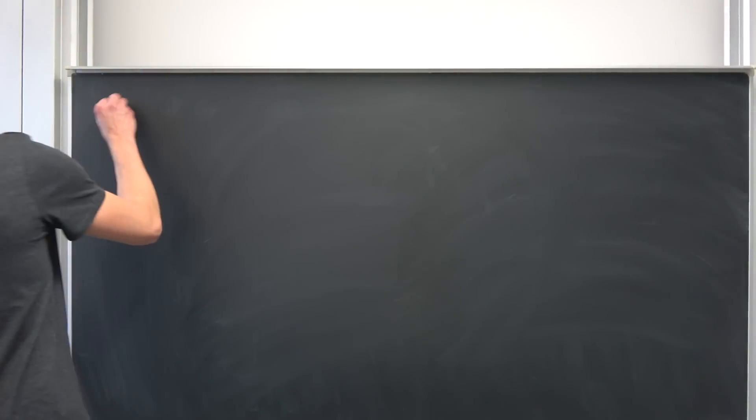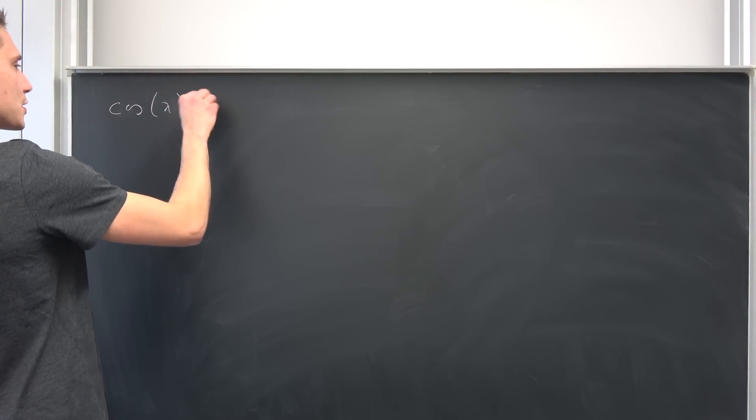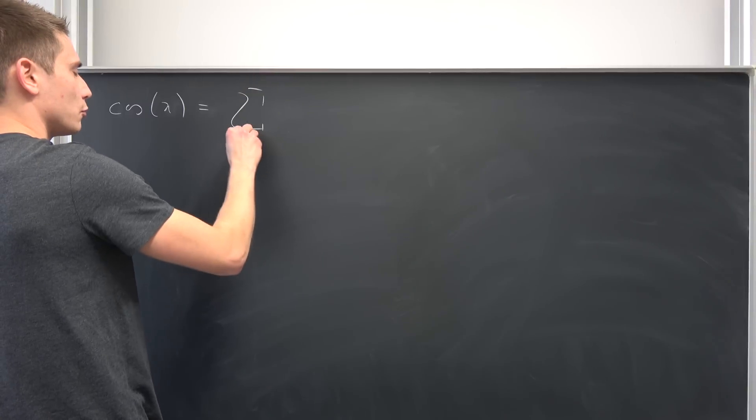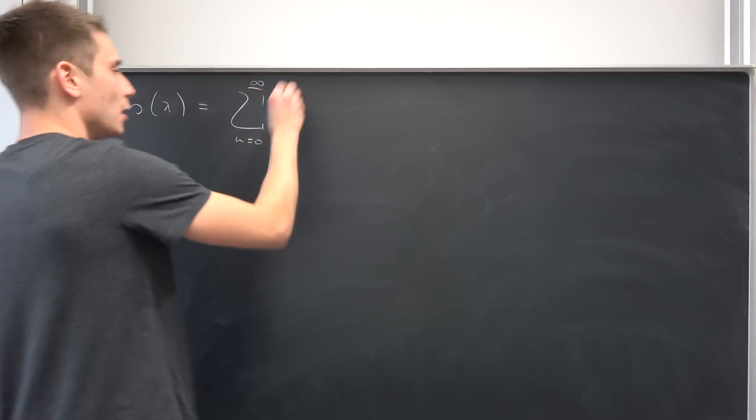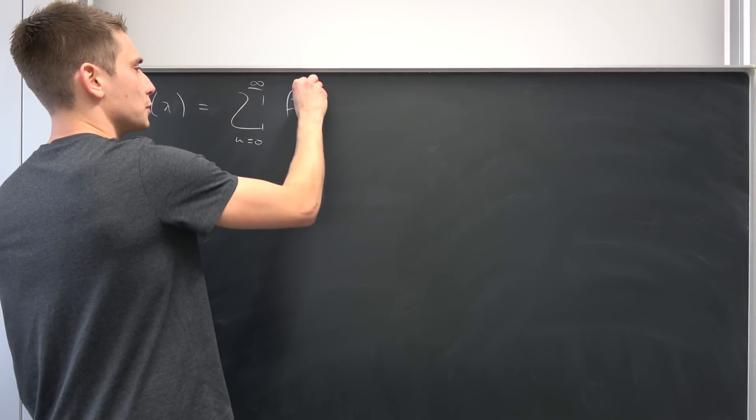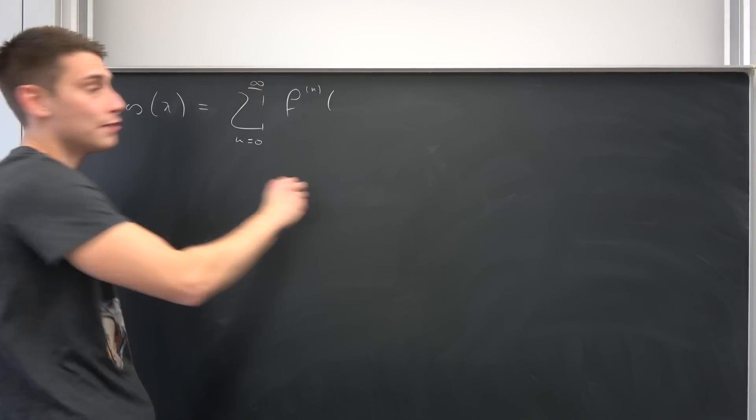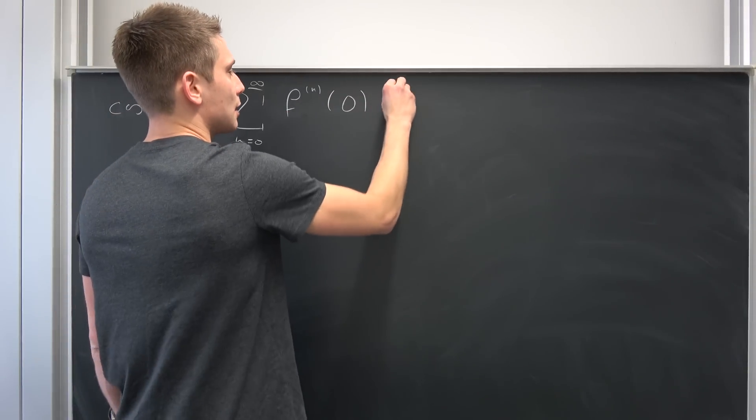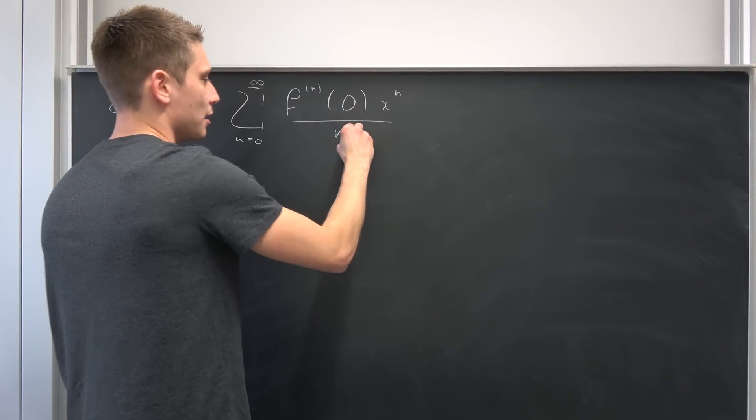Meaning we want to express our cosine of x as an infinite sum from n equals zero to infinity of the nth derivative of cosine, f evaluated at zero, times x to the nth power over n factorial.